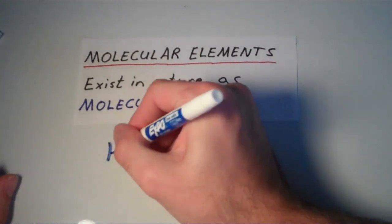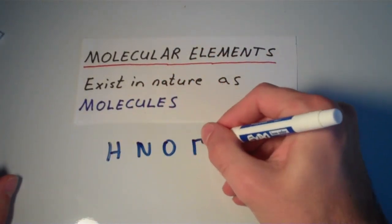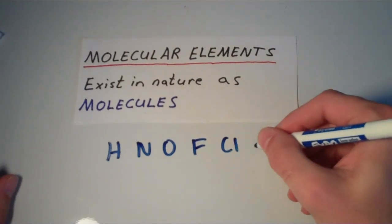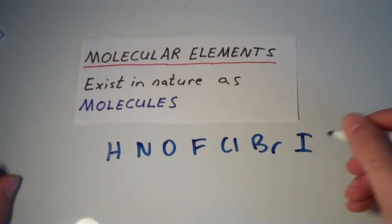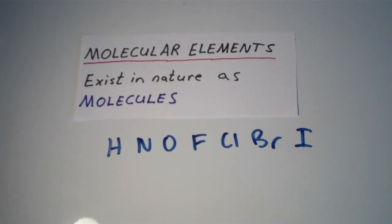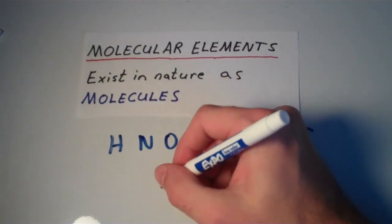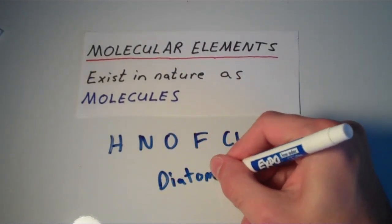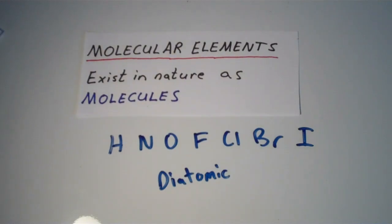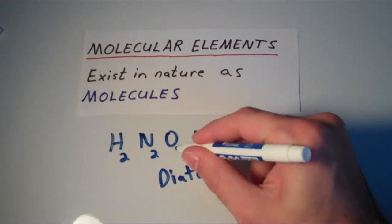So elements like hydrogen, nitrogen, oxygen, fluorine, chlorine, bromine, and iodine, these are all molecular elements. And the one thing that all of these elements have in common is that they are diatomic. They are diatomic elements, meaning they are all composed of two atoms.